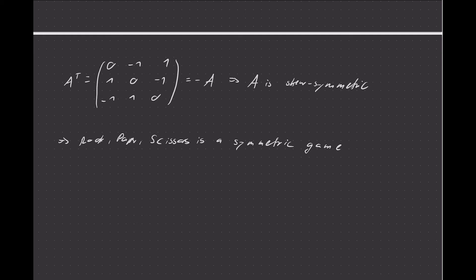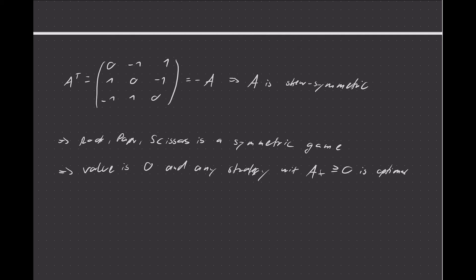According to the theorem, we know the value is 0 — so the game is not biased in favor of any player. We also know any strategy x where Ax ≥ 0 is optimal, so we only need to find a strategy with that property.